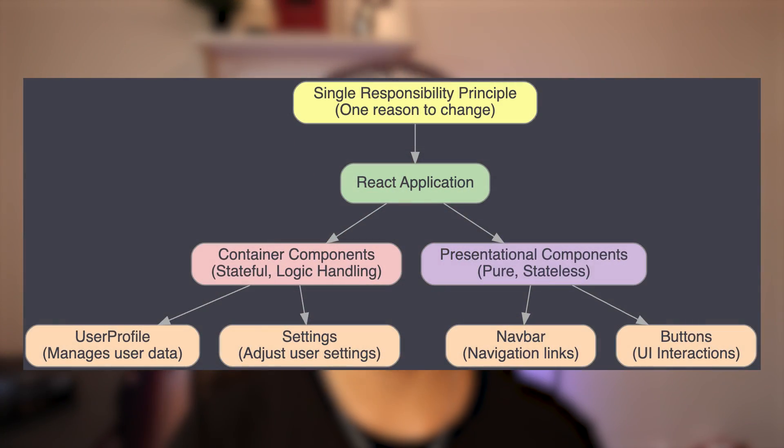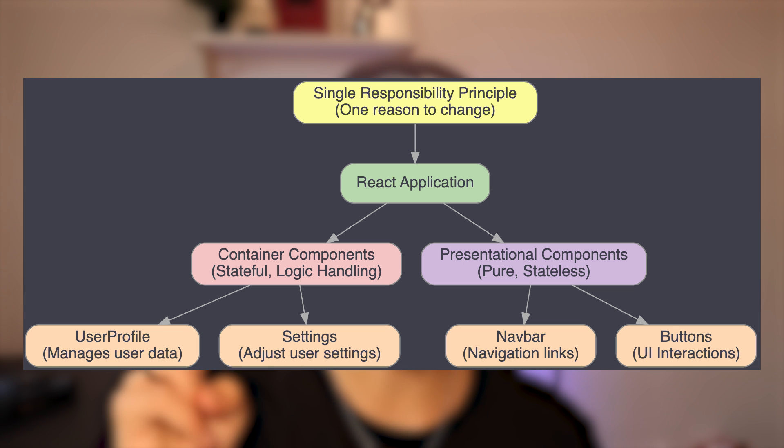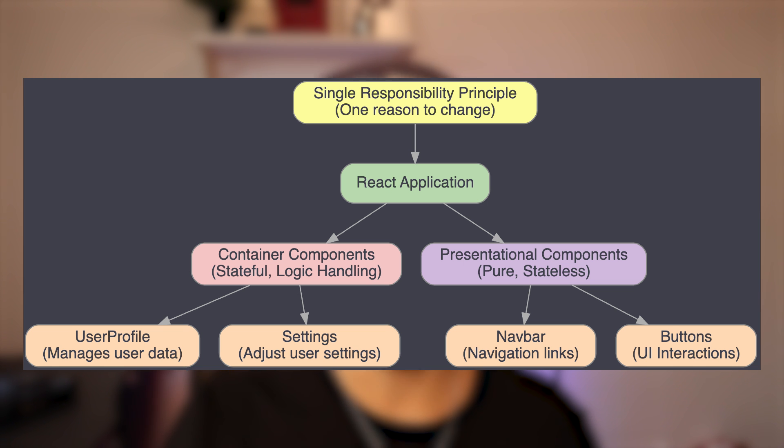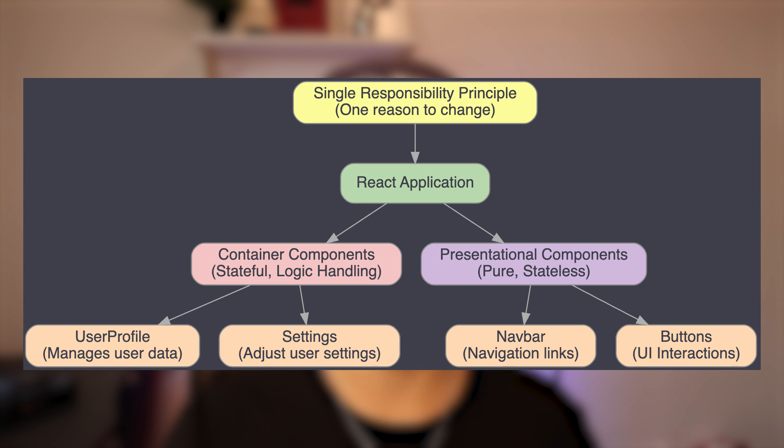First of all, let's start with the foundation of React. We couldn't start with anything other than React components. In React, components are the building blocks of your UI — each of them should have one responsibility and act independently from each other. This is known as the single responsibility principle, and it is a key aspect of writing maintainable and clean code. Components can be classified into two major types: dumb and smart components — or, as some people call them, container and presentational components.